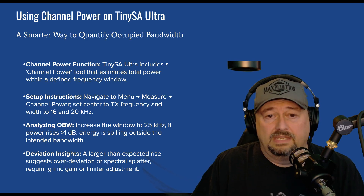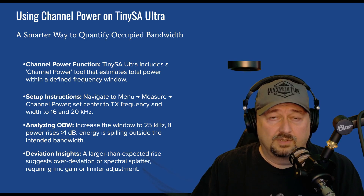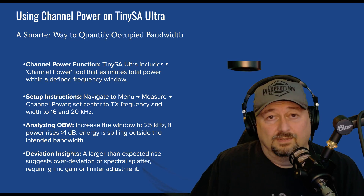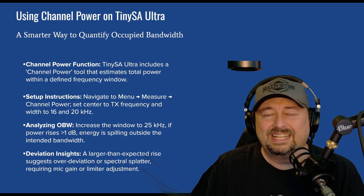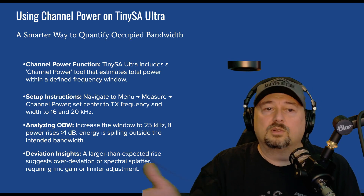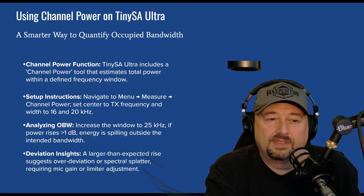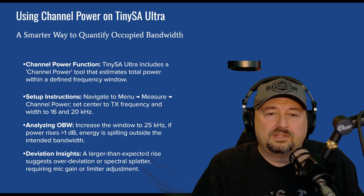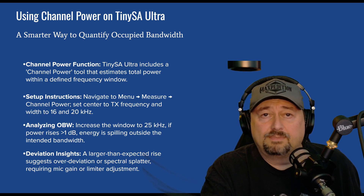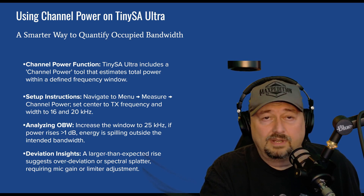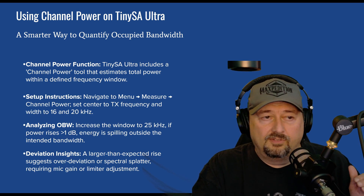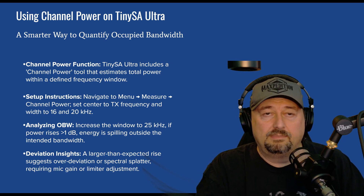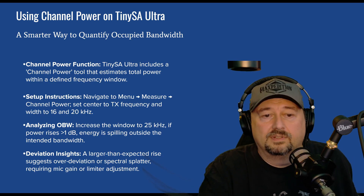We go into the menu, select measure, pick channel power. It asks for a transmission frequency — I do most of my tests on 146.52 MHz, which is the national calling frequency and easy to remember. Then pick a channel width of 16 kilohertz. Once you do your test at 16, you can expand to 18, 20, or 25 kilohertz and look at the output power level to see if it rises. If it rises 1 dB from 16 to 18, that means you have about half a dB of splatter on either side of your signal.